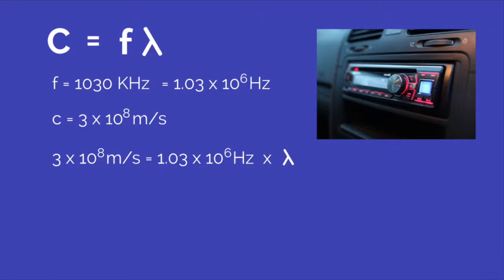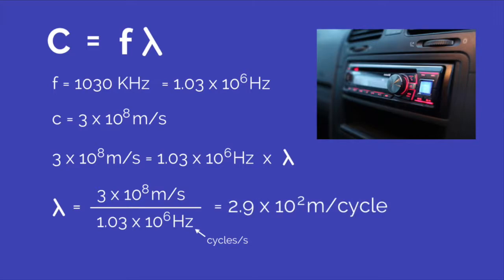To calculate the wavelength lambda, we divide C by F. So lambda equals 3 times 10 to the eighth meters per second over 1.03 times 10 to the sixth hertz. Remember, hertz is cycles per second. So we can see that seconds cancel out, giving about 2.9 times 10 to the second meters per cycle, or about 290 meters. So one wavelength of the radio wave radiating from that radio station is about the same length as 3 football fields.